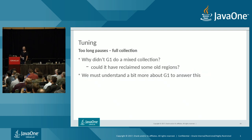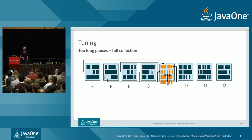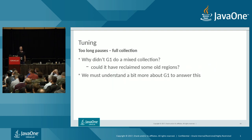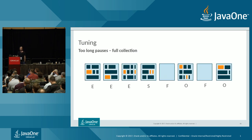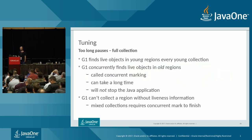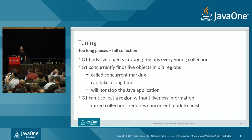You might ask: why didn't G1 do a mixed collection to free up some old regions first? To answer that, we need to understand more about G1 — specifically how it determines which objects are live. G1 finds live objects in young regions at every young collection during the pause, since young regions have few live objects and it's quick. However, for old regions, G1 finds all live objects concurrently — this is called concurrent marking.